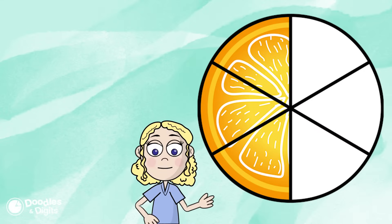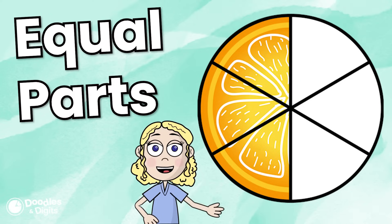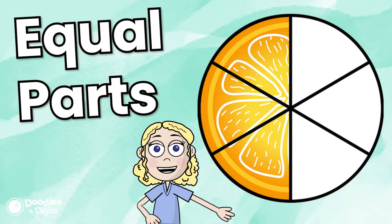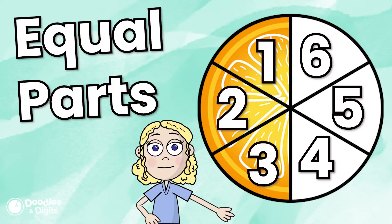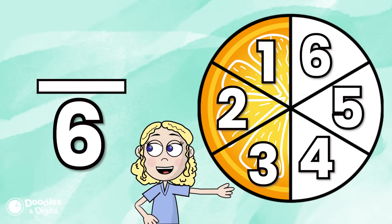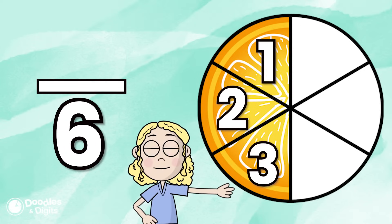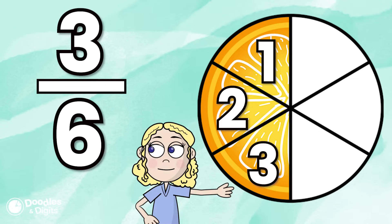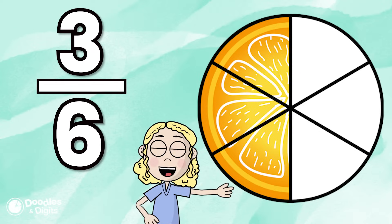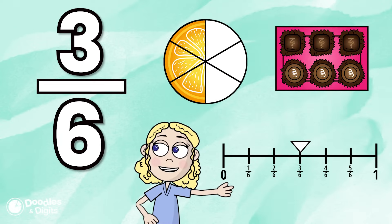Something to remember when we're talking about fractions is we are talking about equal parts. So the denominator is going to tell you how many equal parts we will have in the whole, and the numerator tells you how many equal parts you actually have.